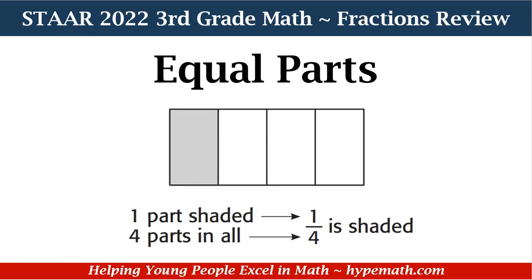In our first example we have a rectangle and it is divided into four equal parts. Whenever you're dealing with fractions, the whole — or the number of the whole — is the denominator, which is the bottom number. Since the rectangle is divided into 4 parts, 4 is our denominator, and the part that is shaded is 1. So 1/4 is our fraction — the 1 is the numerator.